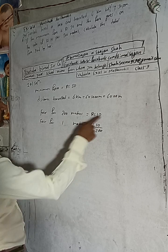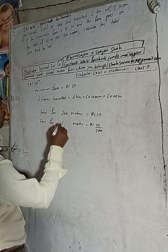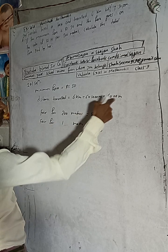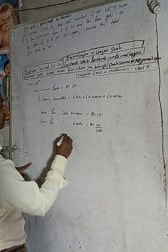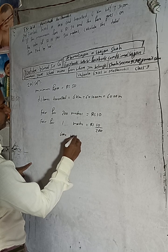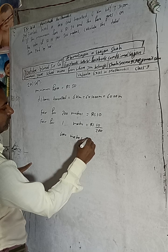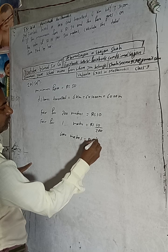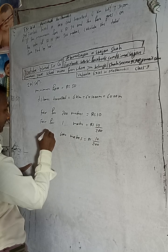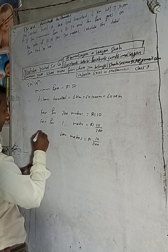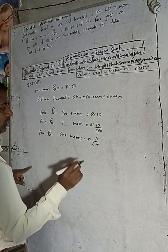If the quantity increases, then we have to multiply. Now we have to calculate the fare for 6,000 meters. The rate is Rs 10 by 200 as established. So fare for 6,000 meters uses this rate.